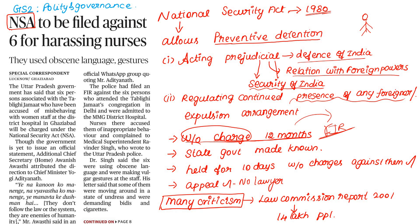The Central Government has the power to detain under the NSA. The Central Government will detain the individual, and the State Government will be informed about it.